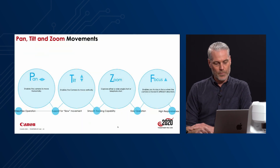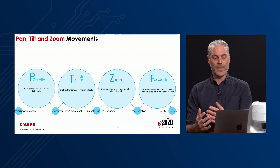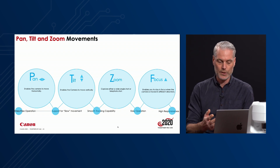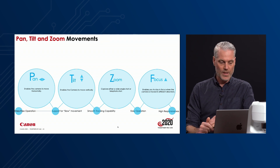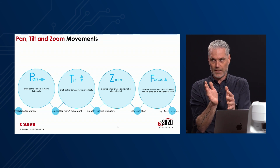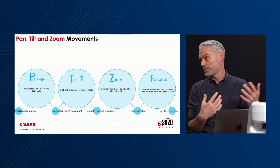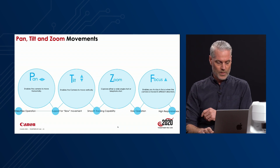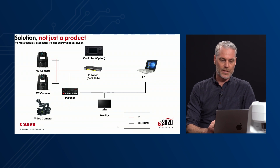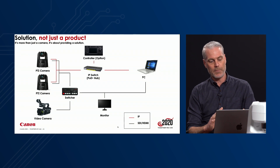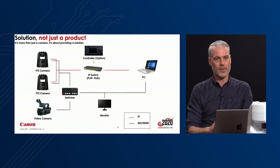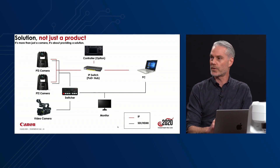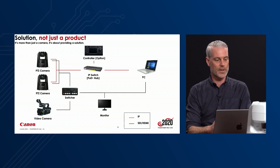PTZ stands for Pan, Tilt, and Zoom. We also added Focus, which we are very proud of — the autofocusing system in our cameras is very well working. Pan means moving the camera horizontally, tilt moves it vertically, and zoom gets you closer or further away. We don't see this as just a product — it's a solution. PTZ cameras have high interest right now because you can control multiple cameras from one control panel, enabling multi-angle productions with fewer people.